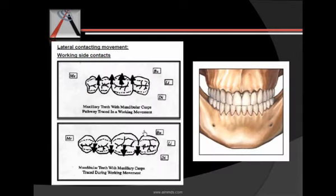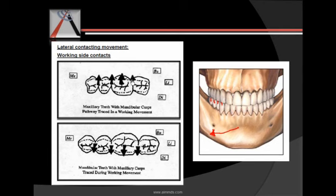In lateral contact movement, the side to which the mandible moves is the working side. When the mandible moves toward one side and we place pencils on the mandibular teeth, they will create a buccally directed mark on the maxillary teeth. This buccal-side mark is created on the maxillary teeth by the mandibular cusps during a working movement.